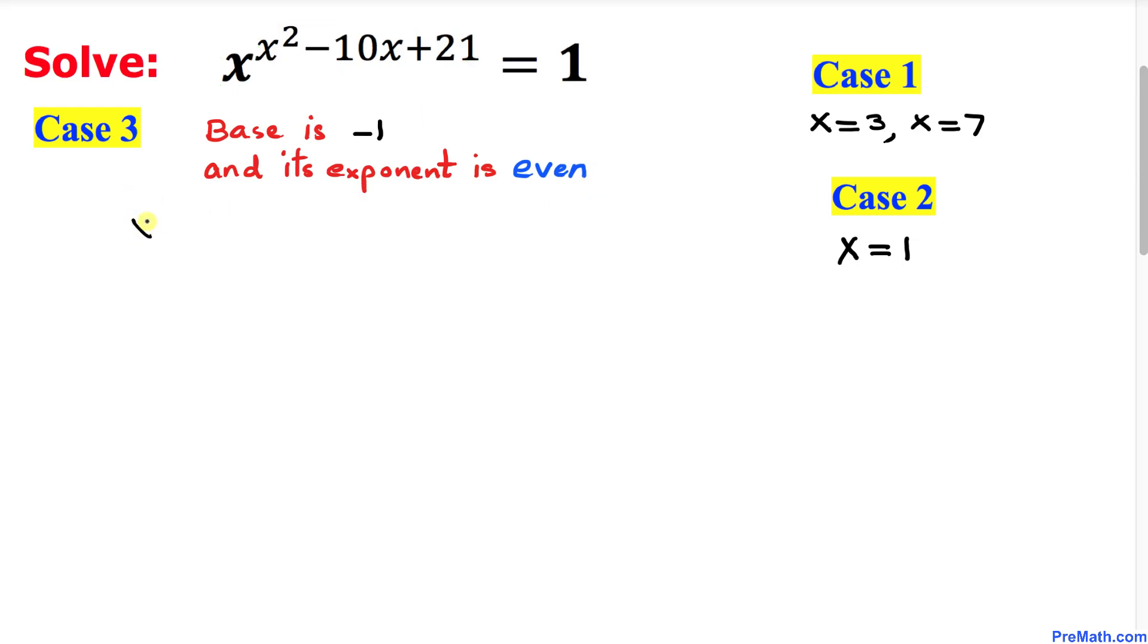So our x value is going to be negative 1 and now we are going to substitute x equal to negative 1 value in our exponent to see whether we get an even number.